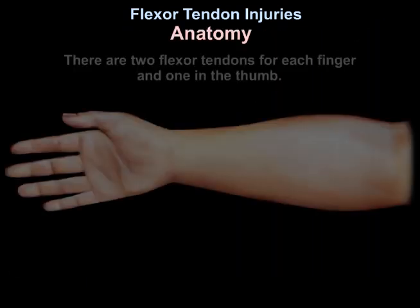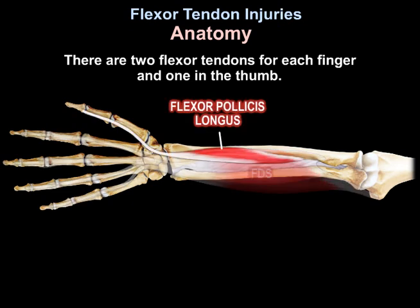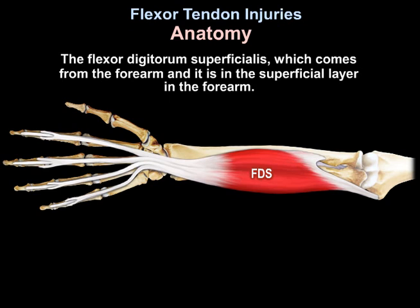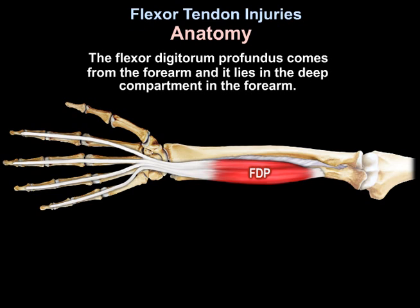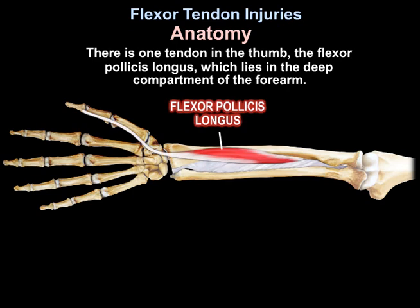The anatomy: there are two flexor tendons for each finger and one for the thumb. The flexor digitorum superficialis comes from the forearm and lies in the superficial layer. The flexor digitorum profundus also comes from the forearm and lies in the deep compartment. The flexor pollicis longus is the one tendon for the thumb and lies in the deep compartment of the forearm.